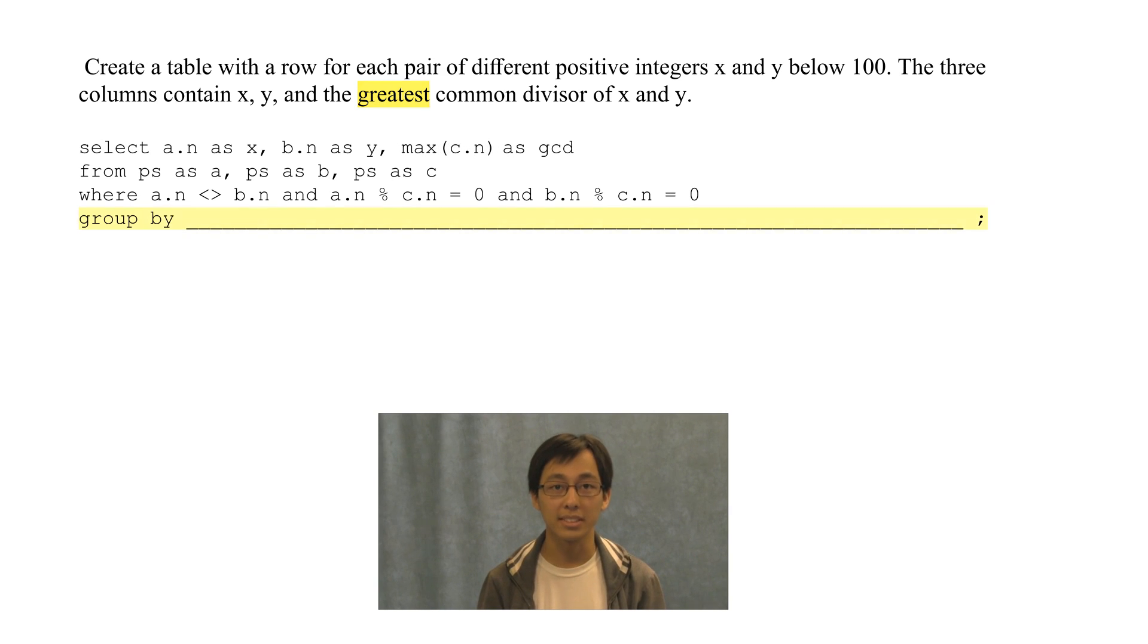It looks like we're done, but there's this extra line here. If you run the code as it is now, you'll just get a table like this, which clearly doesn't have all the pairs, just the pair with the largest GCD.